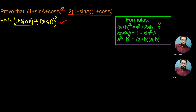First of all, we compare one plus sine A as if it is 'a' and cos A as if it is 'b', so that it can be compared with the formula: a plus b whole square is equal to a square plus 2ab plus b square. Now we can write LHS as: